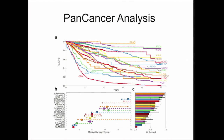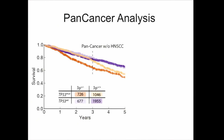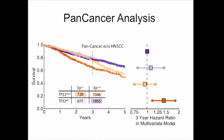We excluded thyroid cancer and prostate cancer, which had very good outcomes. When we looked at this cohort of about 4,000 patients, we see a clear effect of the combination of these events versus each individually. This holds even in a multivariate model including tissue type, stage, and age. So we think this could be a broader signal, at least within subsets of other tissues.